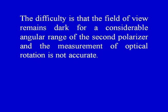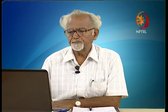The angle of rotation can be measured by fitting a circular scale to the second polarizer. However, in practice the field of view remains dark for a considerable angular range — sometimes plus or minus 10 degrees — making measurement inaccurate. There is no provision for comparison of intensity between two regions side by side. Polarimeters are designed with this feature to measure the angle accurately.